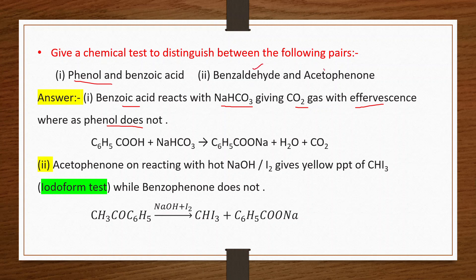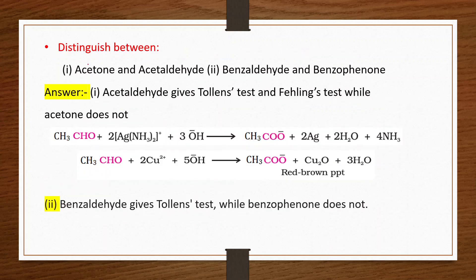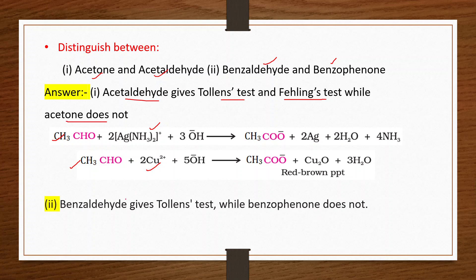To distinguish benzaldehyde from acetophenone: acetophenone (CH₃COC₆H₅) contains the methyl ketone group CH₃CO, so it gives the iodoform test while benzaldehyde does not. To distinguish acetone from acetaldehyde: acetaldehyde gives Tollens test and Fehling's test while acetone does not. To distinguish benzaldehyde from benzophenone: benzaldehyde gives Tollens test while benzophenone does not.